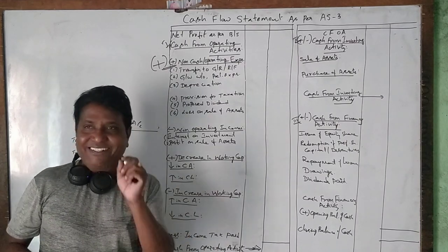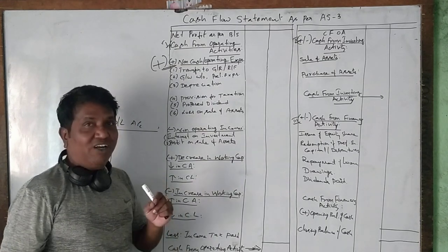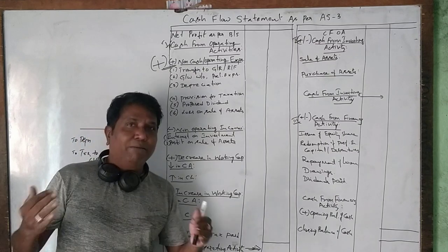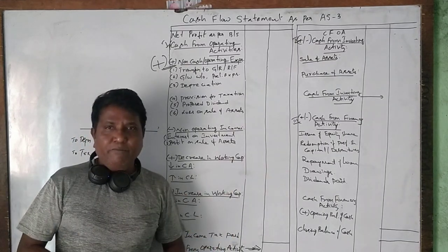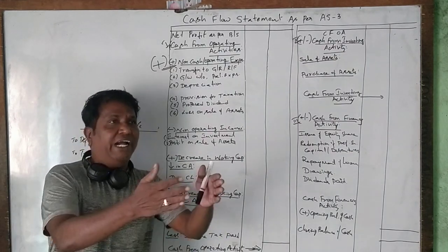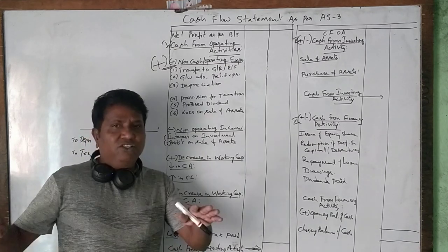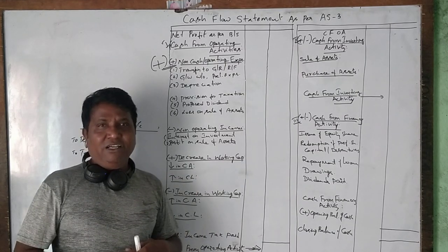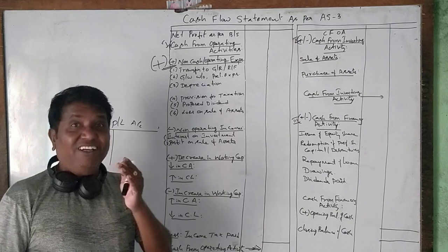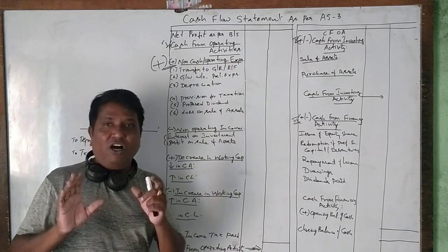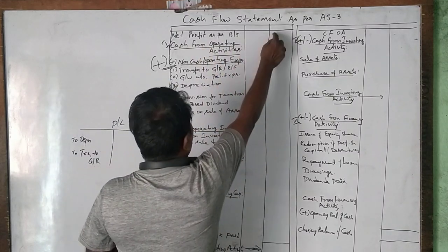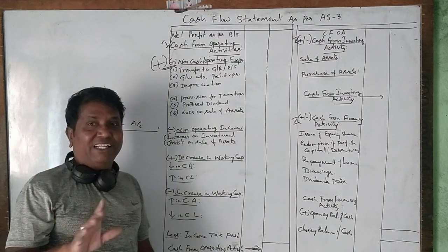Loss on sale of assets is a non-operating expense. For example, if you run a pharmaceutical business and sell an old furniture, computer, or plant at a loss, that is not your core business loss — selling old assets is not your primary business activity. Any such losses incurred on sale of assets are non-operating in nature. All non-cash expenses and non-operating losses should be added back to the net profit in cash from operating activity.